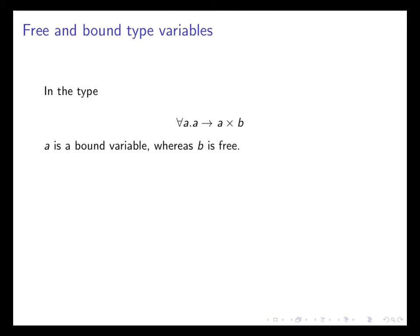If we look at a type, or rather this is a type scheme, in the type scheme for all A, A to A times B, the variable A is bound by the universal quantifier. B is not bound, it's free. So when we have type schemes, we can talk of free and bound type variables.